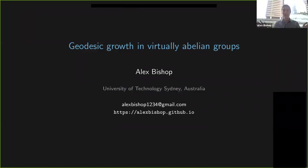I don't have the chat currently open, so if anyone has any questions or if something I say doesn't make sense or something on the slides appears to be wrong, just unmute and tell me. So we're talking about geodesic growth in virtually abelian groups. The title sounds like something that should really be obvious, and even when we go into the definitions the problem still sounds easy to solve — but the proof is far from immediate and far from obvious. Let's start with where the problem came from.